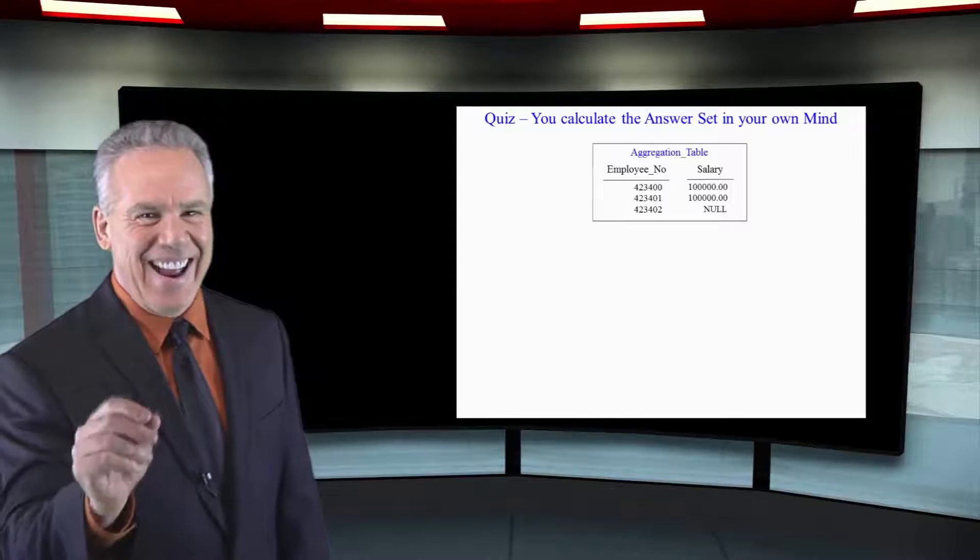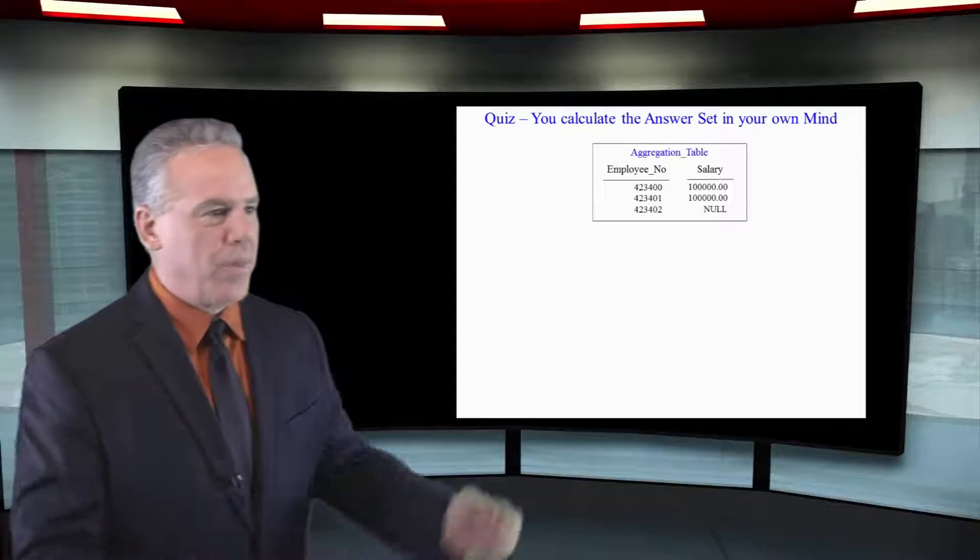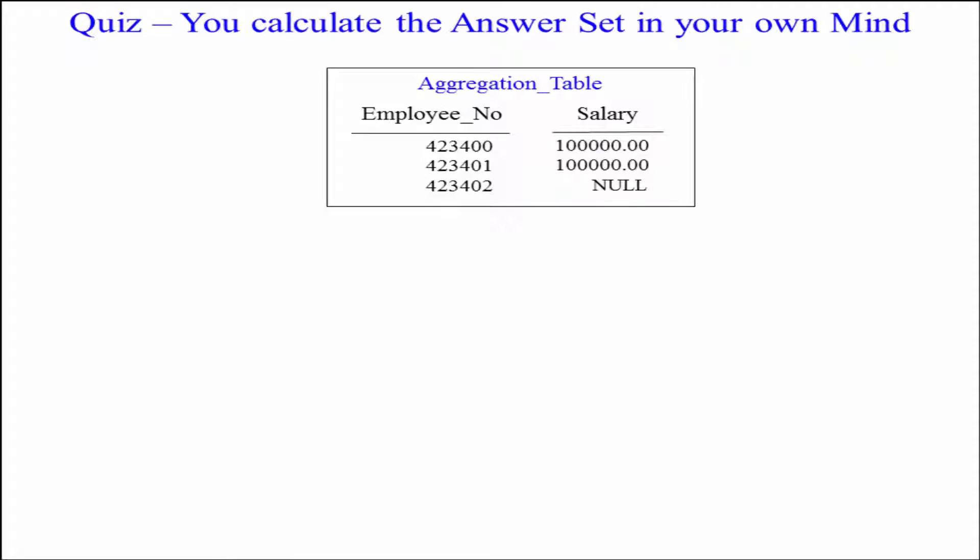Okay, now what I want you to see here is that I've got an example for you. It's the aggregation table. There's only three rows in it. It's got three employee IDs and then it's got a salary of $100,000, another salary of $100,000, and then the last salary is null.